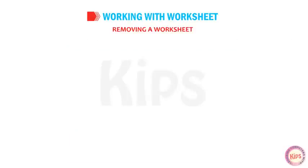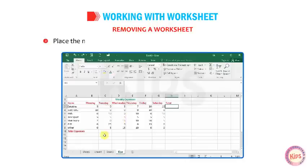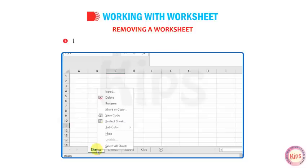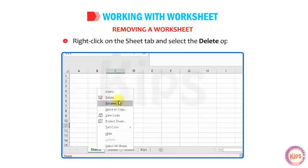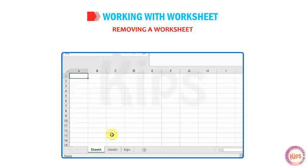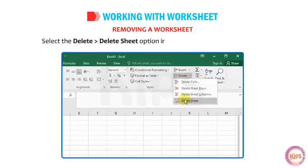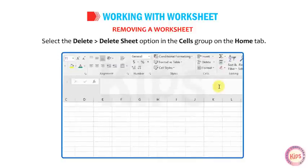To remove a worksheet, place the mouse pointer on the worksheet tab you want to delete. Right-click on the sheet tab and select the Delete option. Alternatively, select Delete > Delete Sheet in the Cells group on the Home tab.